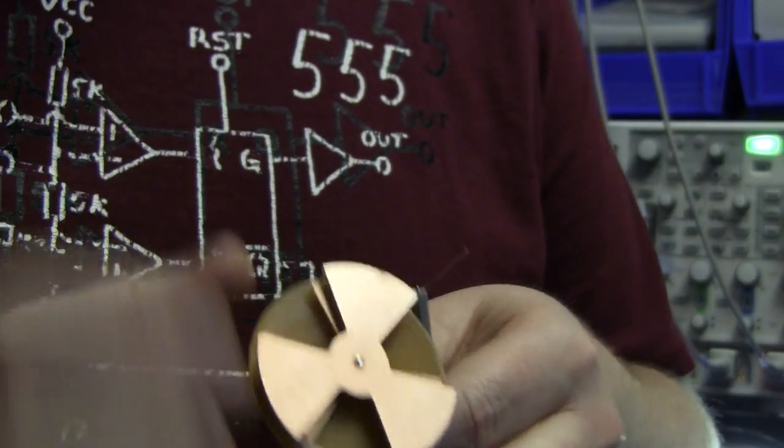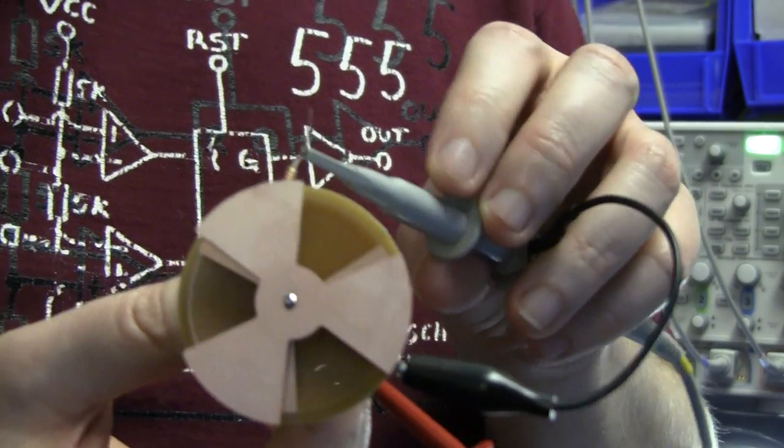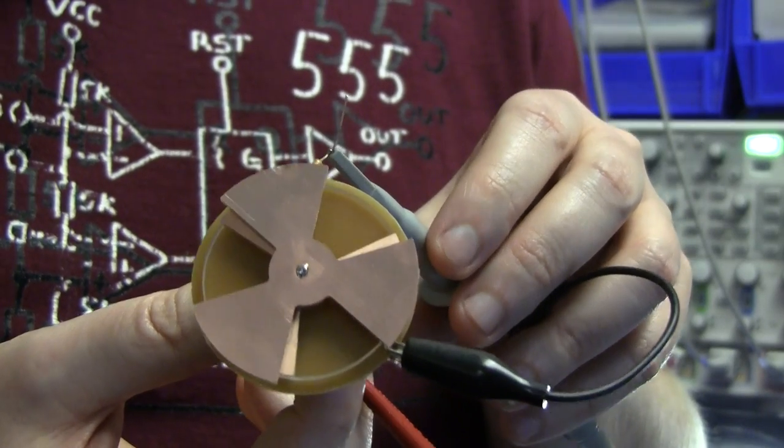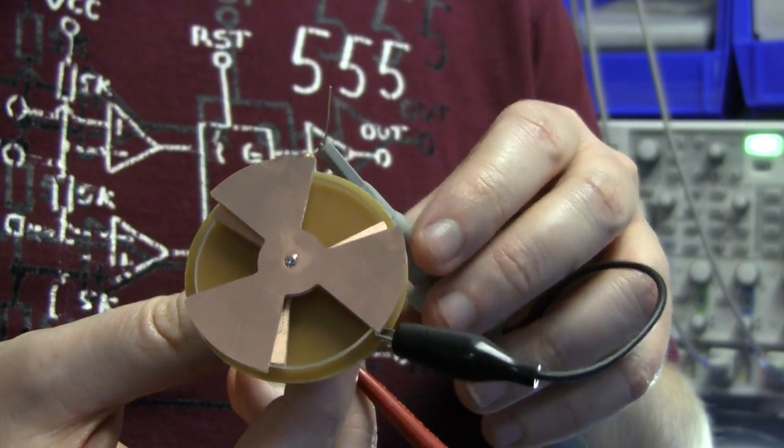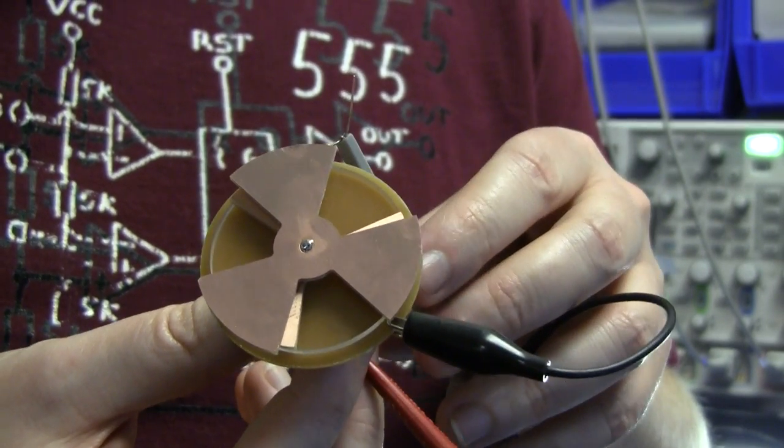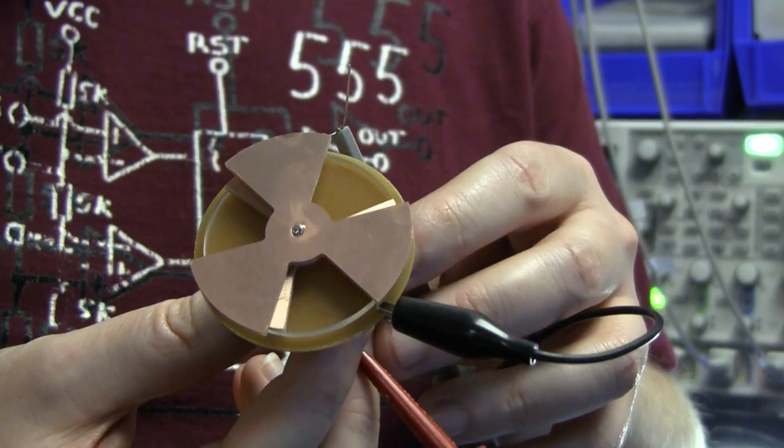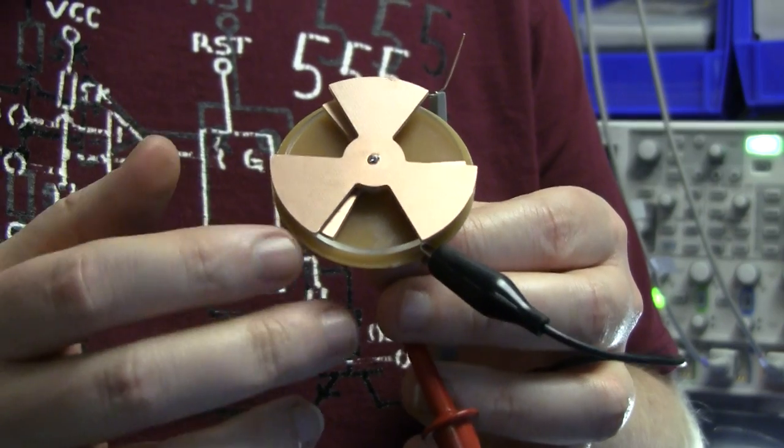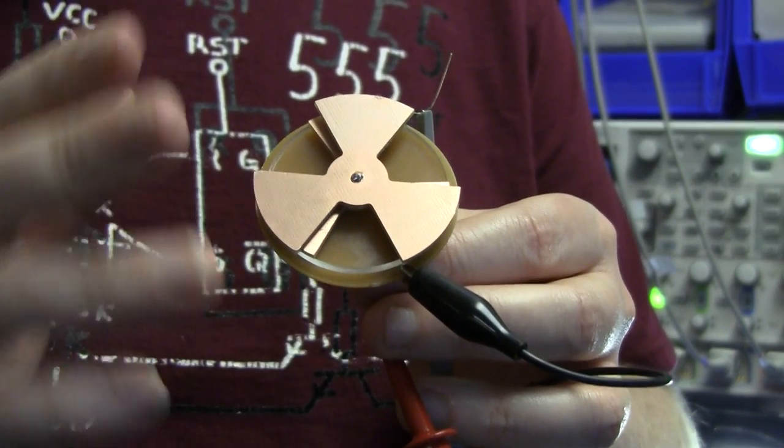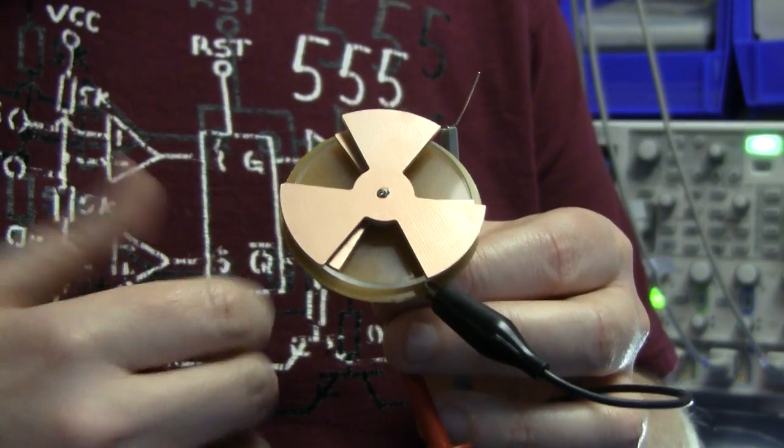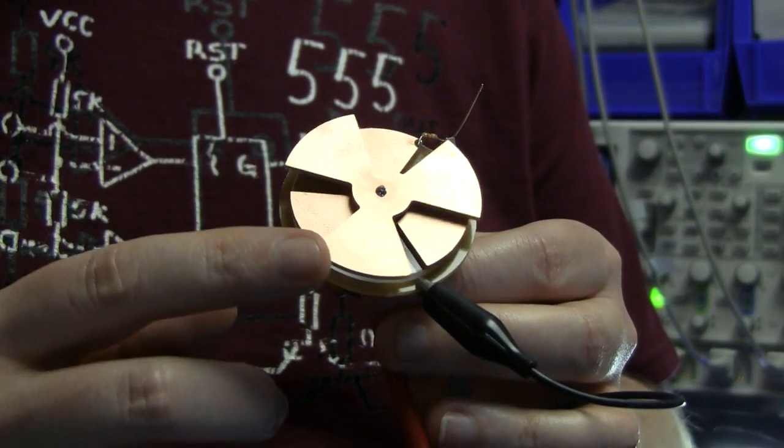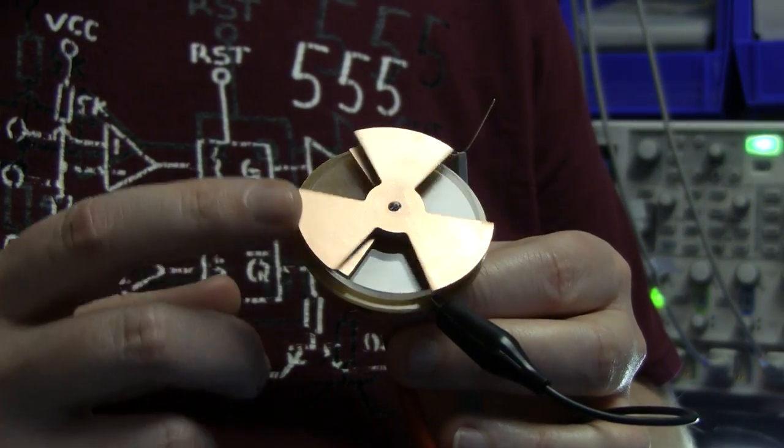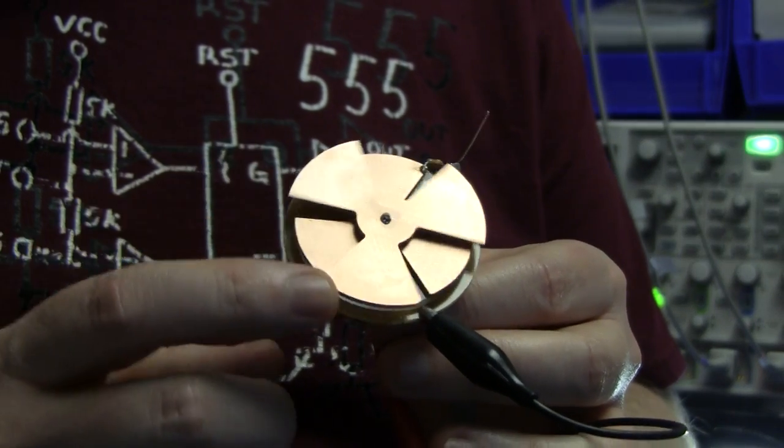And I've hooked this up just straight to the oscilloscope at the moment. Probably in a later video we'll talk more about making an amplifier for this and a synchronous detector so it can detect not only the amplitude of the electric field but also its sign. At the moment, all you can tell here is that there is an electric field and its amplitude but you don't get the vector quantity of it.